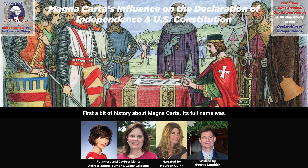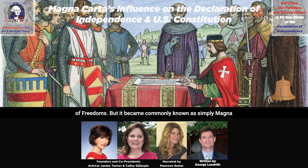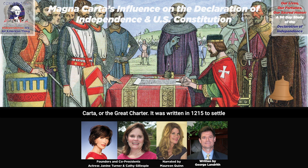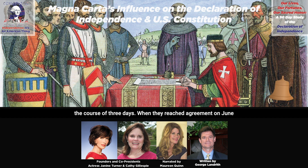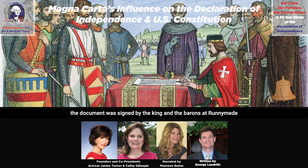First, a bit of history about Magna Carta. Its full name was Magna Carta Libertatum, which is Latin for Great Charter of Freedoms, but it became commonly known as simply Magna Carta or the Great Charter. It was written in 1215 to settle an intense political dispute between King John of England and a group of barons who were challenging King John's absolute right to rule. The terms of the charter were negotiated over the course of three days. When they reached agreement on June 15, 1215, the document was signed by the king and the barons at Runnymede, outside of London.